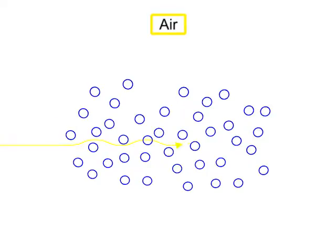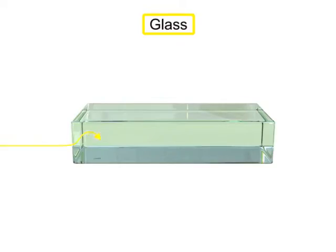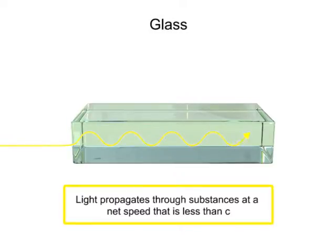When light encounters a medium such as air, water, or glass, it propagates through the substance at a net speed that is less than C.